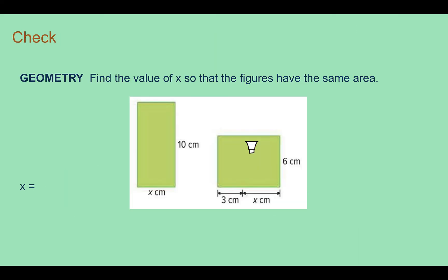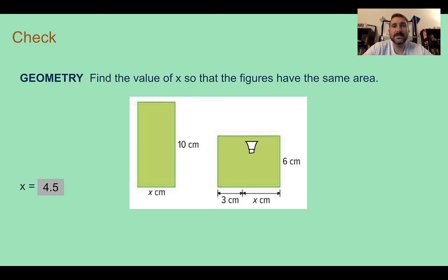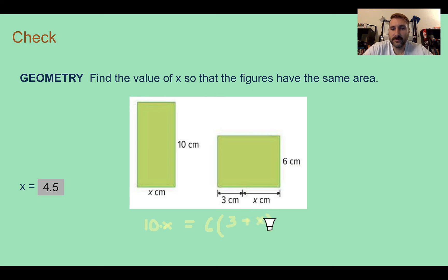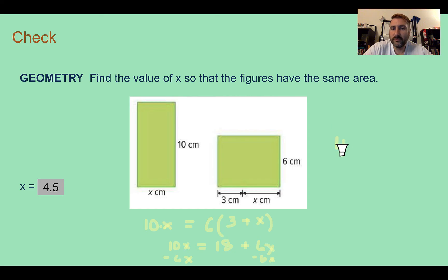Check your understanding: find the value of x so that the figures have the same area. You should have found x equals 4.5. Both figures are rectangles, so area is base times height: on one side 10x, and on the other side 6 times the quantity 3 plus x. Distributing gives 18 plus 6x equals 10x. Subtracting 6x from both sides gives 4x equals 18. Dividing both sides by 4, x equals 9 over 2, which is 4.5.